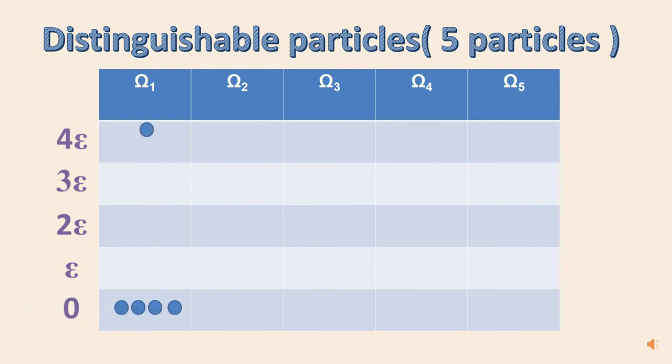Like, first, we choose 1 out of 5 as we have 1 in the 4E level. So, we have 5C1 and the rest goes to the 0 level. 5C1 gives us the possible combinations. Next, we choose 1 out of 5 and put it in the 3 epsilon level and from the remaining 4 put 1 in the epsilon level. That's why we have 5C1 multiplied with 4C1 giving us 20 microstates.